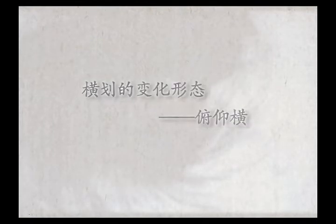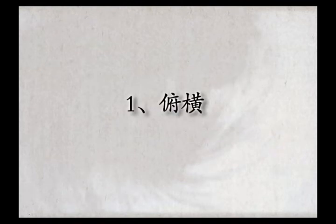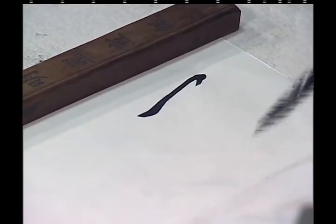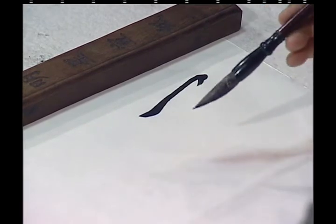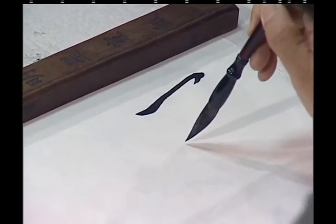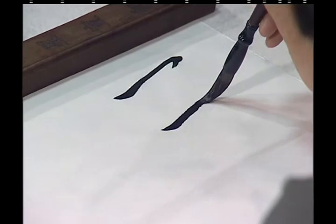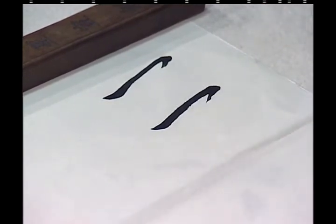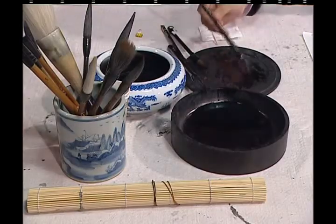这也是书法所谓有内涵的一个重要方面。下面我们就进入横画的这种变化形态的学习，看看横画有哪些变化形态。第一种形态叫做俯仰横，有俯有仰这样的横。比如说我们最开始学到横画这样下笔，然后行笔，然后勾回来。